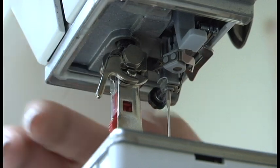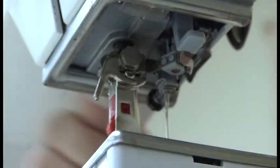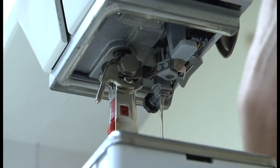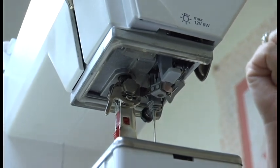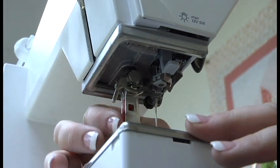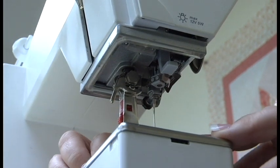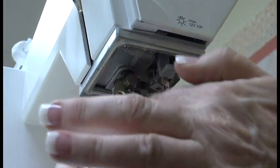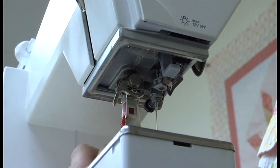Janome, New Home, Elna, Baby Lock, Brother, new Singers—even Pfaffs, they're snap-ons. Pfaff isn't universal, that's why it doesn't interchange with this. But all those other machines, you've got that button that snaps on and snaps off. If you're lucky enough to have one of the 300 line of machines, then this should have come with your machine already.